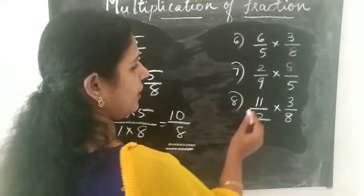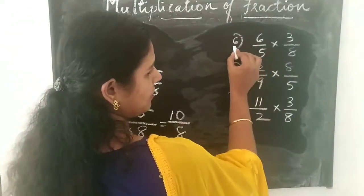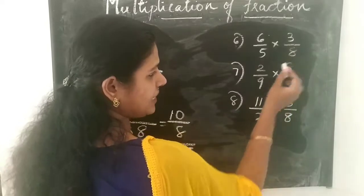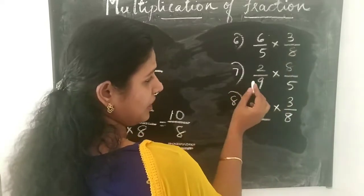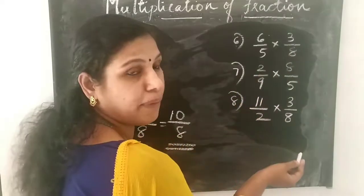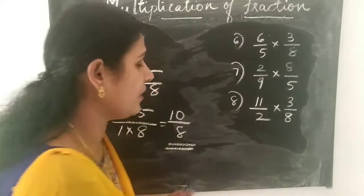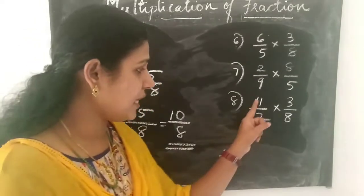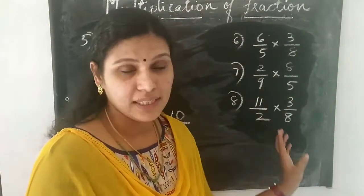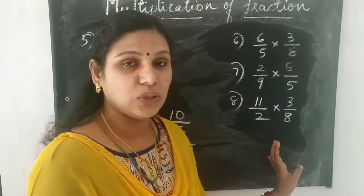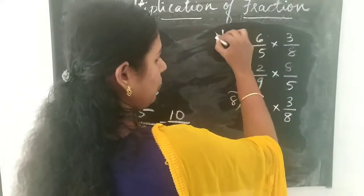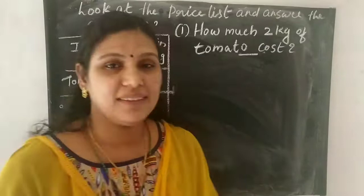The 6th question is 6 by 5 into 3 by 8. The 7th question is 2 by 9 into 8 by 5. The 8th question is 11 by 2 into 3 by 8. These three questions you have to do yourself — that is your homework.